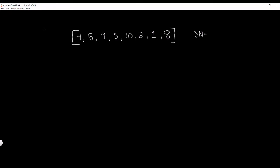In this video I want to show you guys how to find the smallest number in a list. The very first thing we want to do before we do any kind of iteration is assume the very smallest number — that's what SN stands for — and set smallest number equal to the very first item in our list. In this case it's 4, so we're going to assume from the get-go that the smallest number in our list is 4.